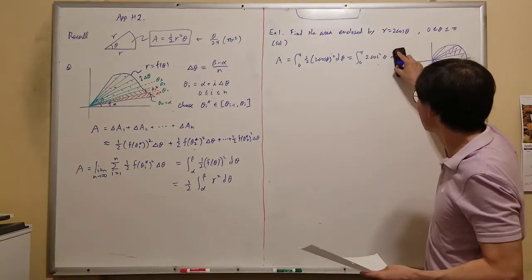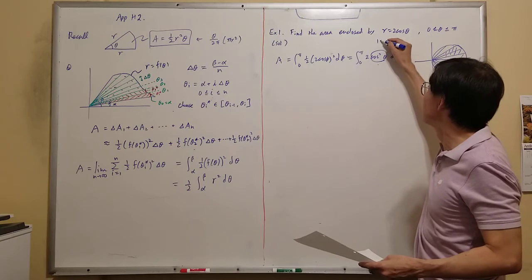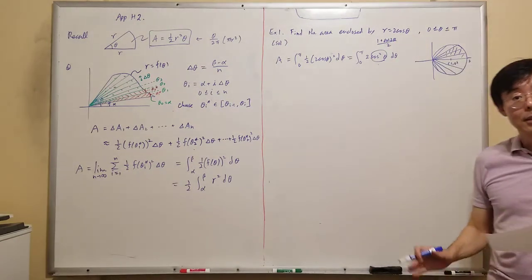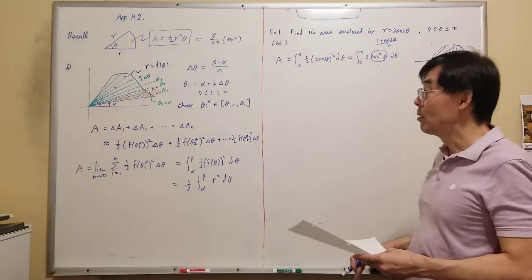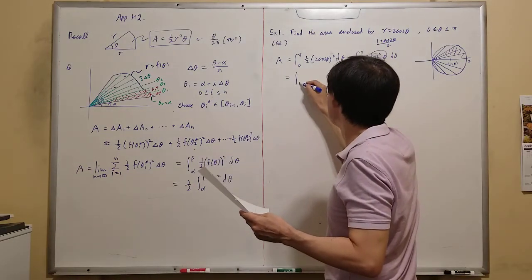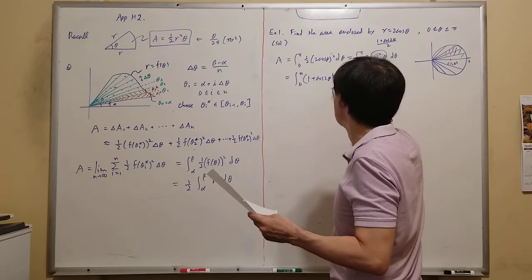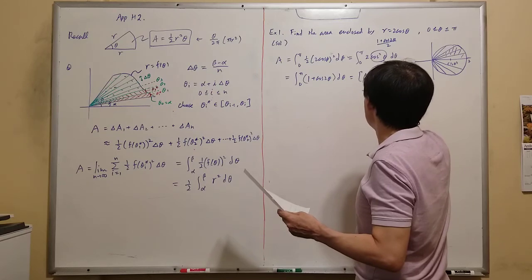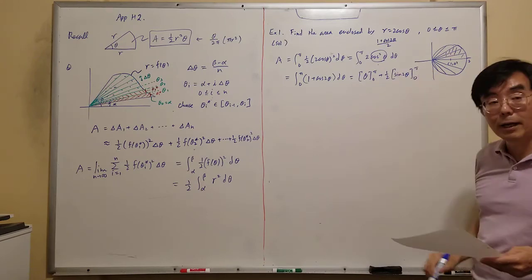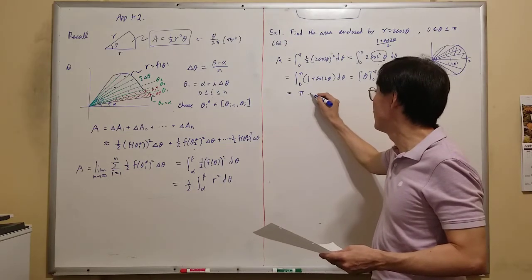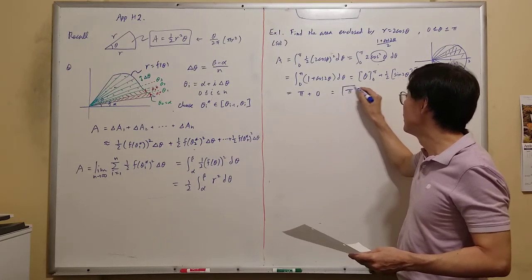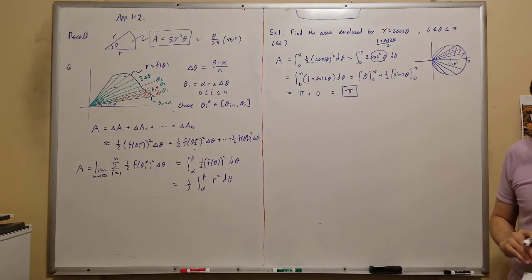Applying the power reduction formula, the 2's cancel and we get the integral from 0 to π of (1 + cos2θ) dθ. Evaluating: [θ + one half sin2θ] from 0 to π. This gives (π + 0) − (0 + 0) = π. As expected, this matches πr² = π·1² = π — confirming the area formula.